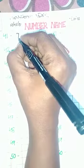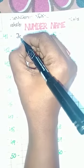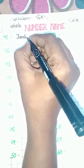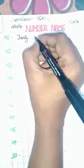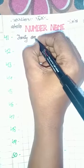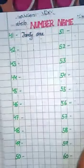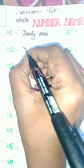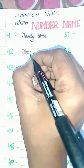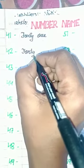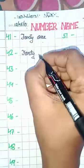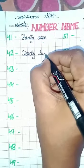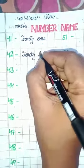41. F-O-R-T-Y, forty, O-N-E, 41. 42. F-O-R-T-Y, 40, T-W-O, 42.